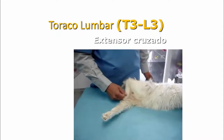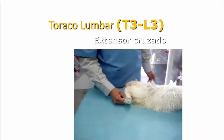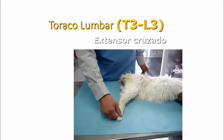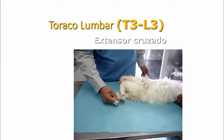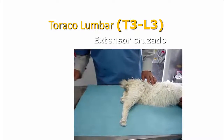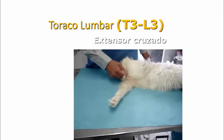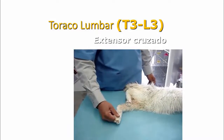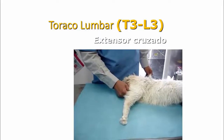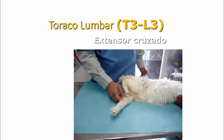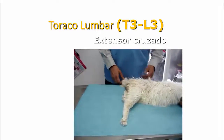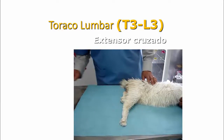El extensor cruzado también se presenta en la zona toracolumbar, con neurona motora alta definitivamente. Se hace el arco reflejo correctamente pero tenemos una extensión contralateral. Este signo patológico no estará presente en el paciente normal; indica que es una lesión severa toracolumbar. A diferencia de Schiff-Sherrington, el extensor cruzado no se da inmediatamente: se presenta entre 3 y 5 días después de la lesión y permanece por el resto de la vida del paciente.